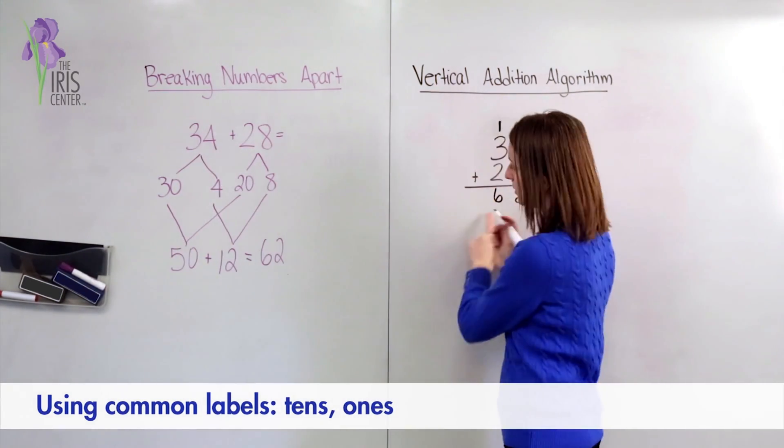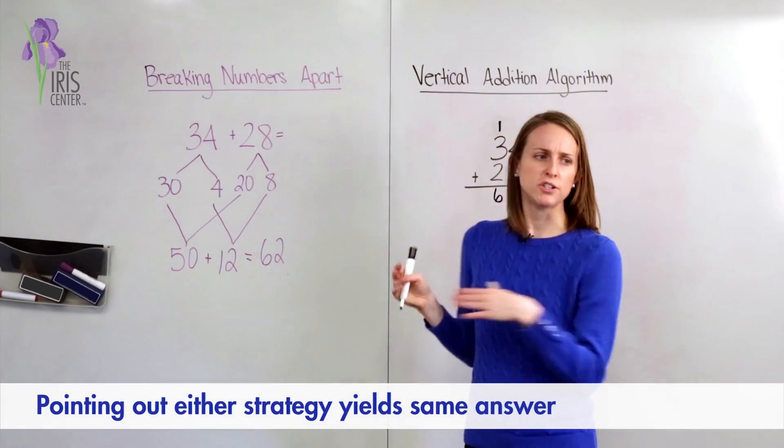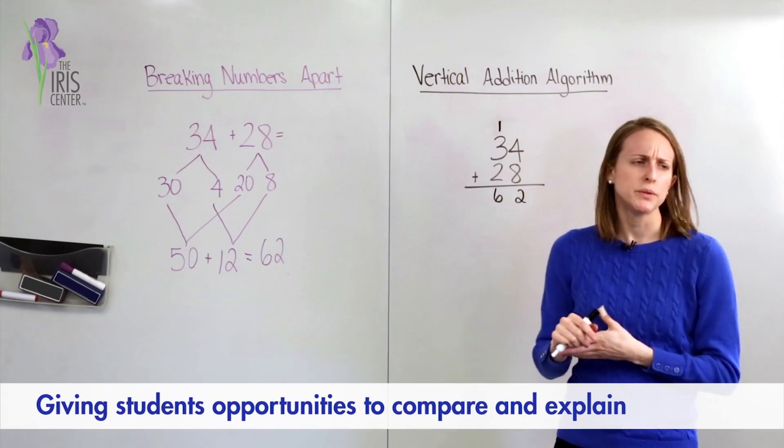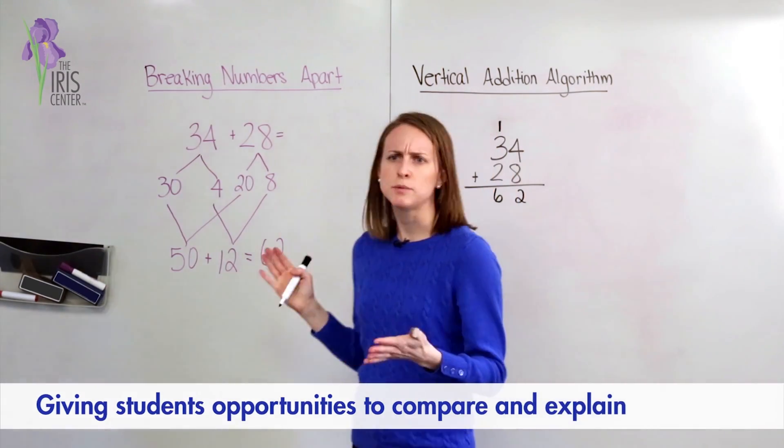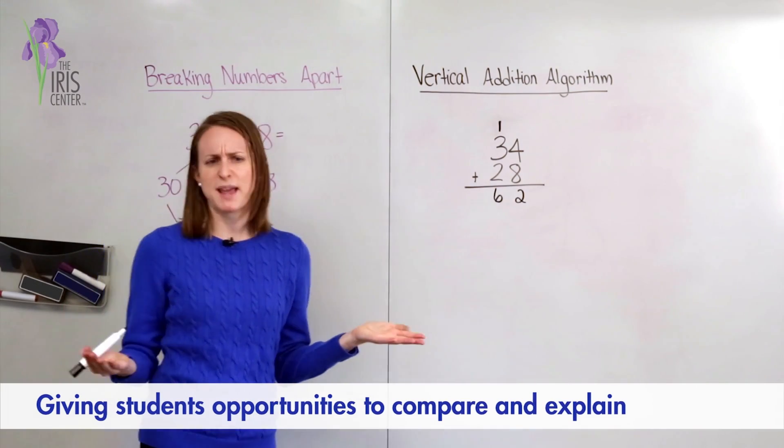And if you notice, 62 is the same as 62. So both of our strategies gave us the same answer. Now I want you to think, what else is similar or the same about these two strategies, besides just the same answer?